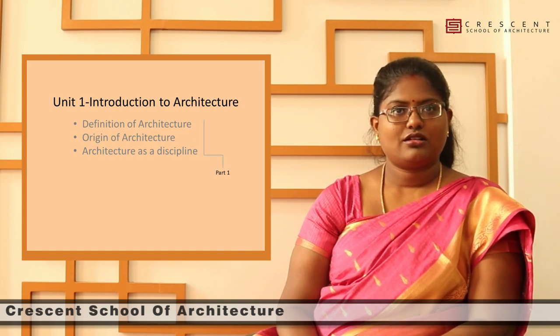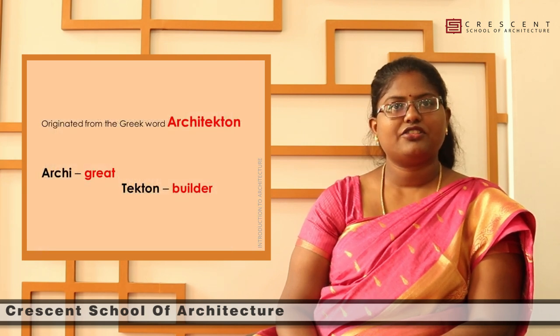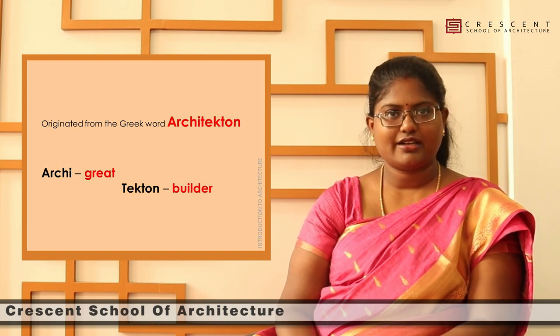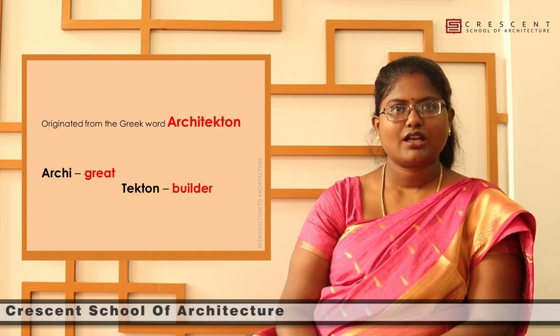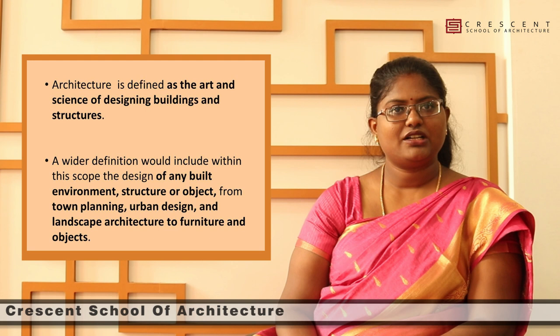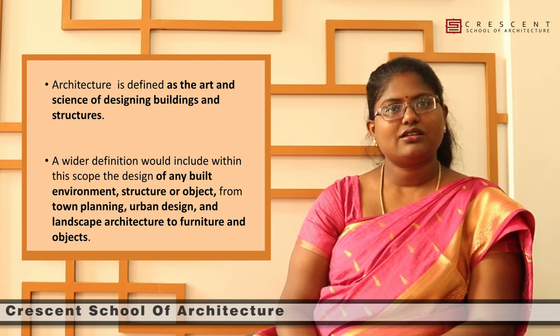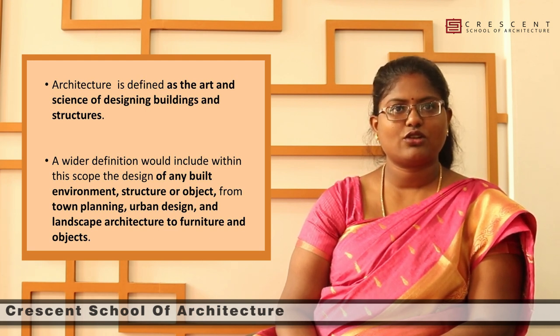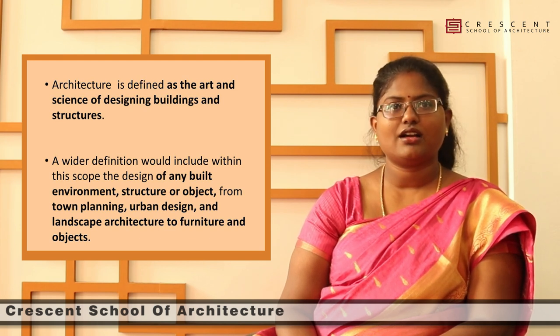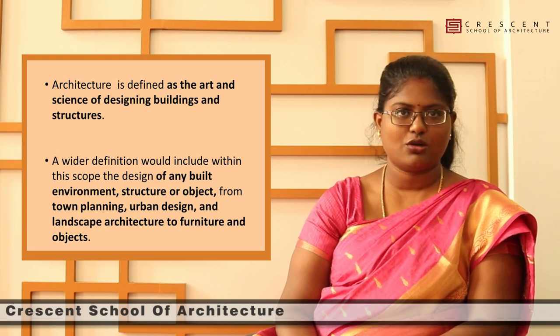What is the discipline and definition of architecture? The most preliminary introduction — what is architecture? It was actually originated from the Greek word 'architecton.' 'Arche' means great, 'tecton' means builder. So, architecture is defined as the art and science of designing buildings and structures. A wider definition would also include within the scope the design of any built environment, structure or object — from town planning, urban design, and landscape architecture to furniture and objects.